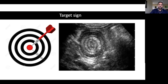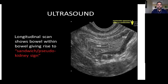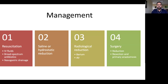The target sign in ultrasound shows the three layers of the intussusception — outer, middle, and inner — appearing as concentric rings. The longitudinal section gives a pseudo kidney sign or sandwich sign, again due to the three layered structure. These are the two key ultrasound signs: target sign and pseudo kidney sign.